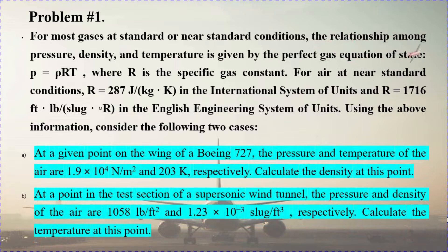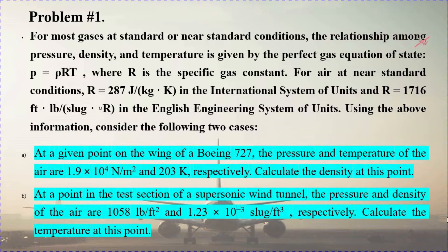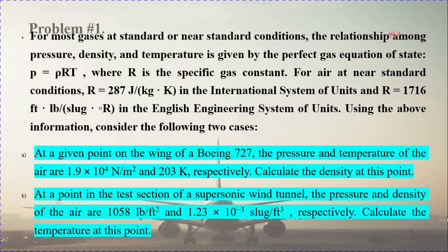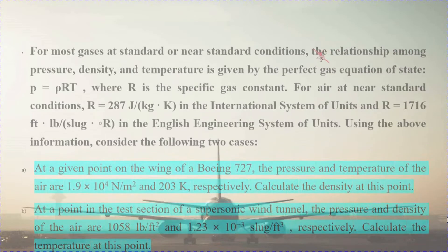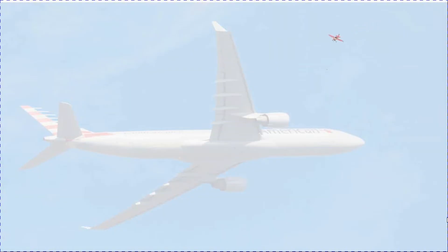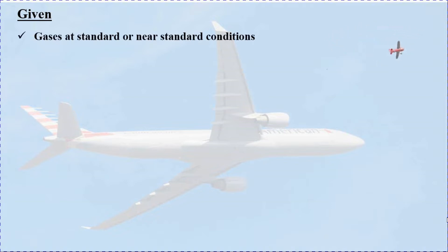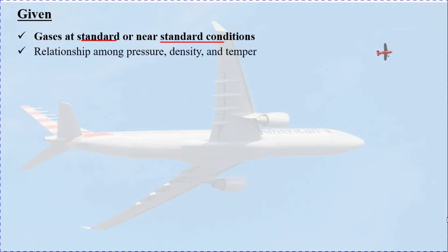The problem is at standard conditions, so the gas is at standard condition. The relationship between pressure, density, and temperature is defined by the perfect gas equation of state: P equals density times R times T. When we have a perfect gas, we apply the equation of state: pressure equals density times R times T.